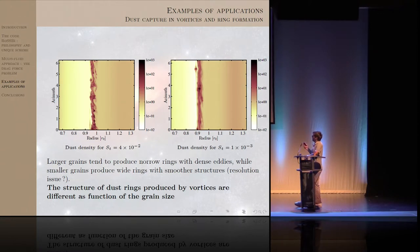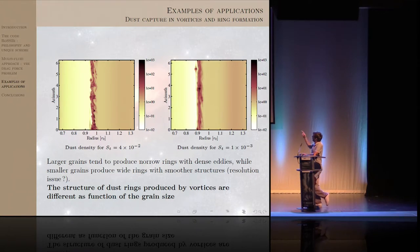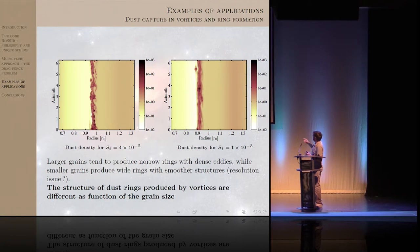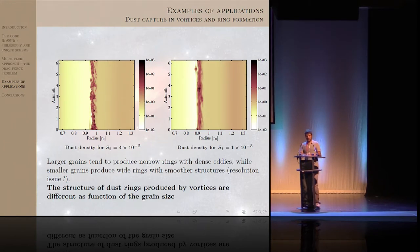After the vortex instability, the vortex is sheared away, leaving a ring structure visible in the dust density. After 800 orbits, you can see very small dense eddies up to a thousand times the disk background density — exceeding the density in gas structures. On the right, the same result is shown for smaller grains (Stokes number 10 to the minus 3 vs. 4 times 10 to the minus 2 on the left). For smaller grains, the structures are smoother and wider, though convergence studies are needed to confirm whether smaller structures require higher resolution.